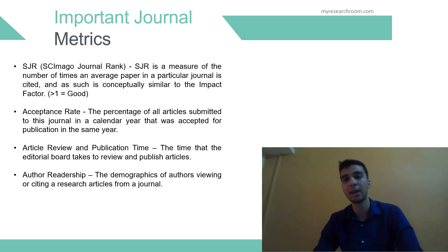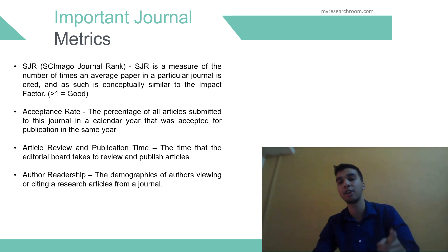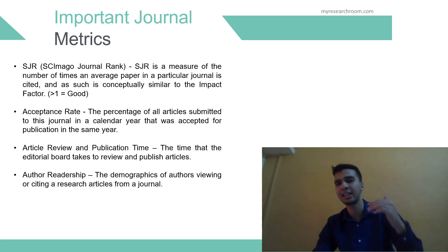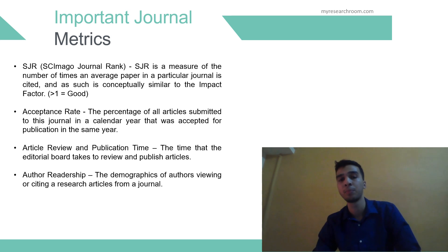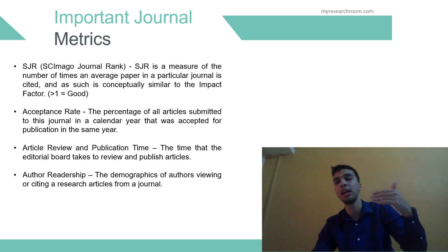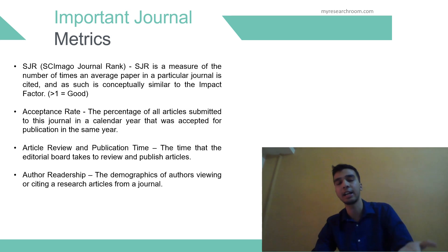The next is the SJR, or SCImago Journal Rank. This is a measure of the number of times an average paper in a particular journal is cited, and as such is conceptually similar to the impact factor. The major difference is that instead of each citation being counted as 1 as with the impact factor, the SJR assigns each citation a value greater or less than 1 based on the rank of the citing journal. The weighting is calculated using a 3-year window of measurement and it uses the Scopus database. Authors can use these metrics when deciding where to publish. A good SJR score is above 1.